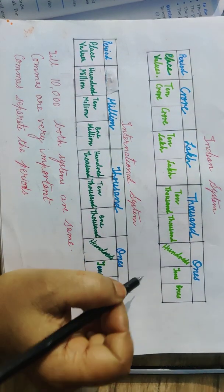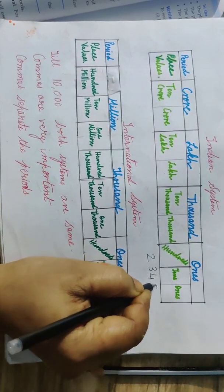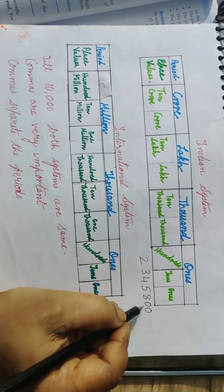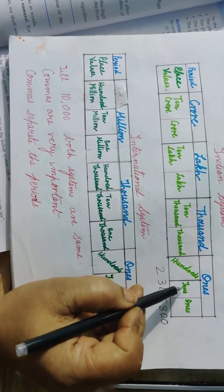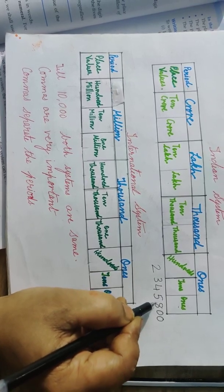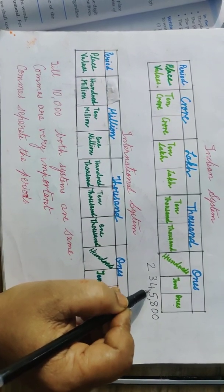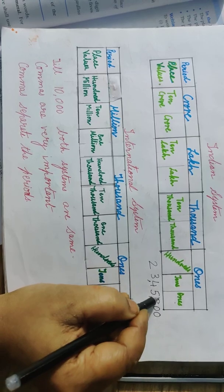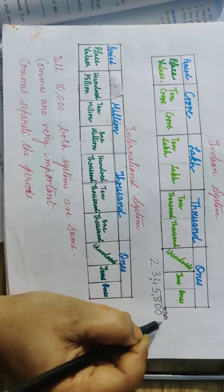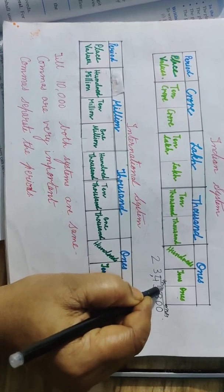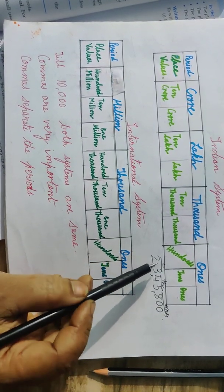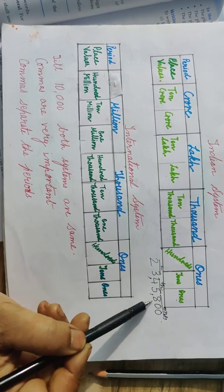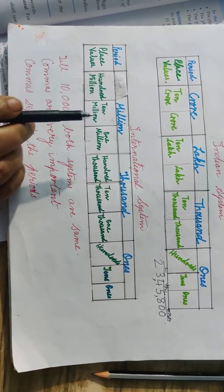Suppose we take the number 23,45,800. First, we mark the ones period — there are three places, so we place a comma after three digits: 800. Then the thousands period has two places: 45, so we place a comma. Two digits remain for the lakh period. So we read: ones period, thousands period, lakhs period — twenty-three lakh, forty-five thousand, eight hundred.